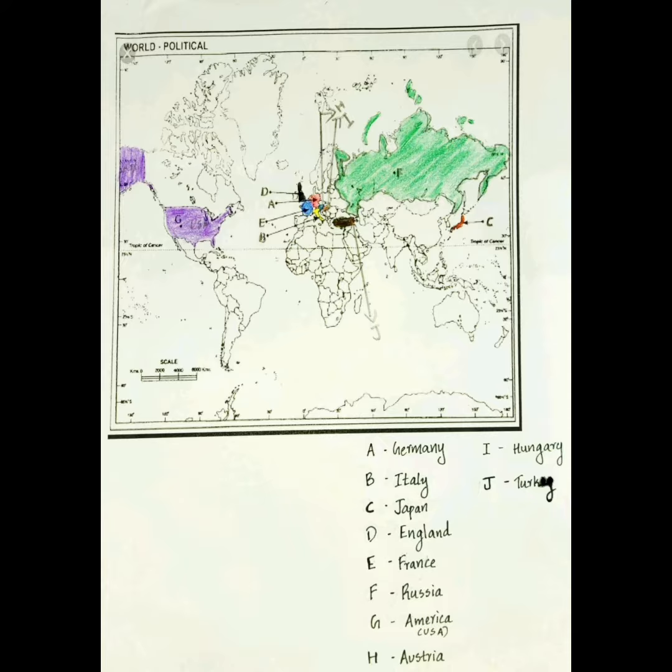Another group was Central Powers. It includes Austria, Germany, Hungary, and Turkey.